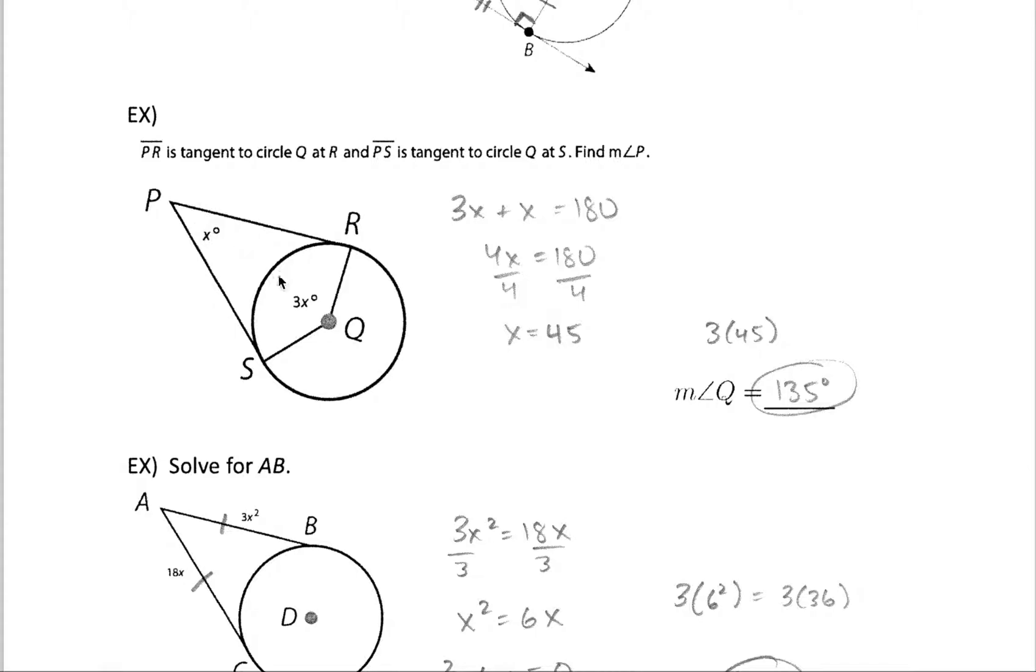In this first one we see a similar diagram, so we know that this central angle right here represented by 3x is going to be supplementary with this angle measure represented by x up here. So 3x plus x has to equal 180. Let's combine like terms and divide by 4, and we get the x value of 45. So angle P is 45 degrees, and if we plug 45 in here and triple it, we know that angle Q is 135 degrees.